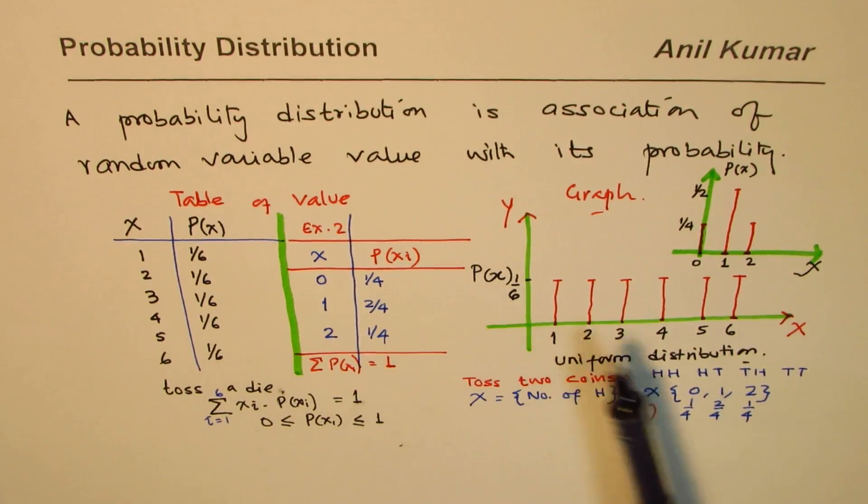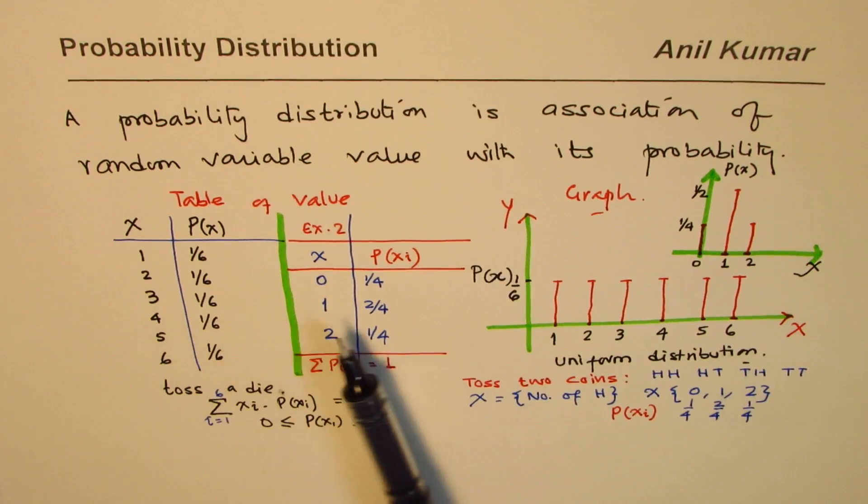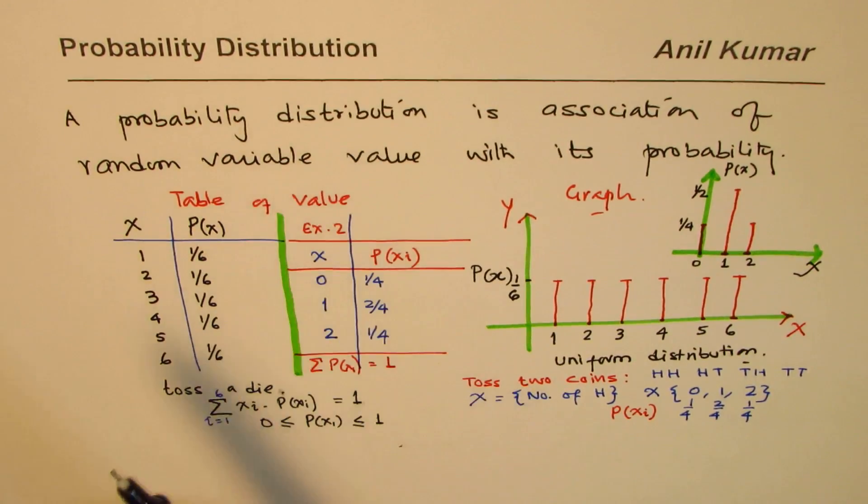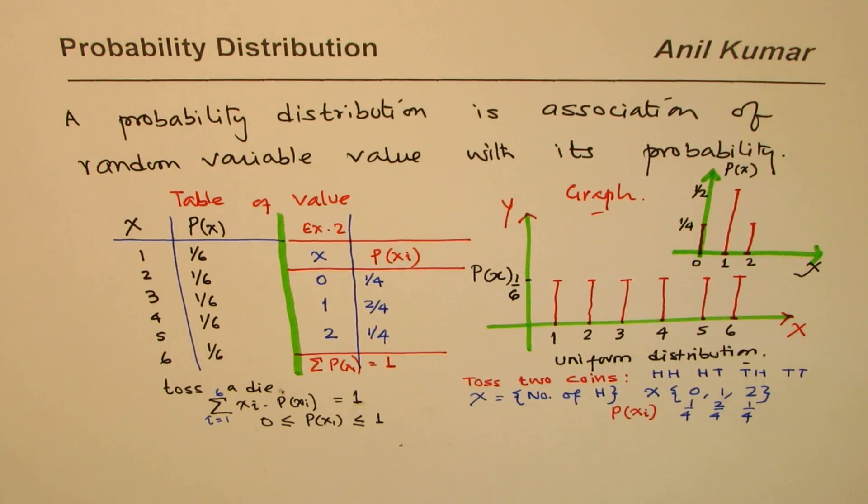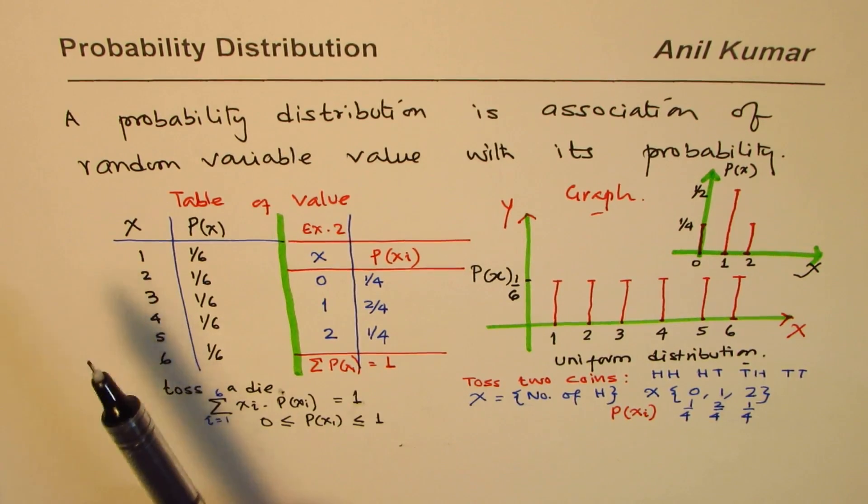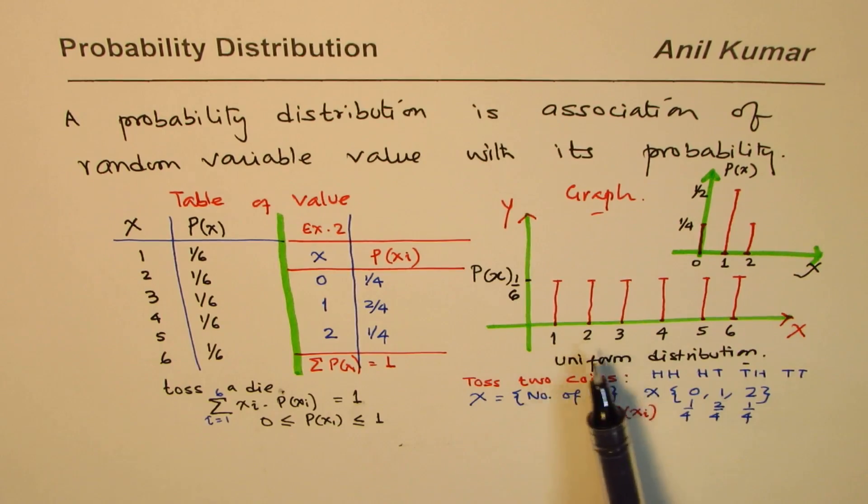What we see here is there are two different ways of representing probability distribution. Basically, it is a table. And this table information can be translated on a diagram, as shown here, histogram. The probability of the random variable, that is the number of times an event occurs, is always between 0 and 1. And some of their probabilities is always equals to 1. That is how we can summarize our understanding of probability distribution.